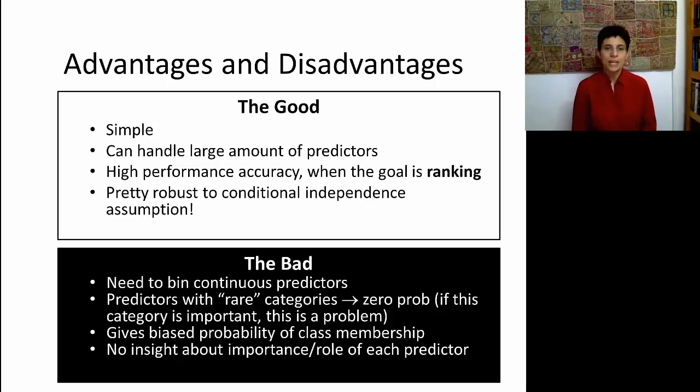The weaknesses of this classifier is that you're going to have to bin your continuous predictors. The other problem is that because you have to be able to see all the possible profiles that you'll want to predict in the future, if you have predictors that have very rare categories, suppose it's a postal code with very few people who live in that area, then that will give you a zero probability. There's some ways of tweaking that and avoiding that, but it's a problem that is built into this classifier. Another problem is if you're not trying to rank, but you're actually interested in the class probabilities, then you're getting biased results. And finally, it is also a black box, in the sense that we don't know which ones of the predictors actually led to the accuracy of the output.